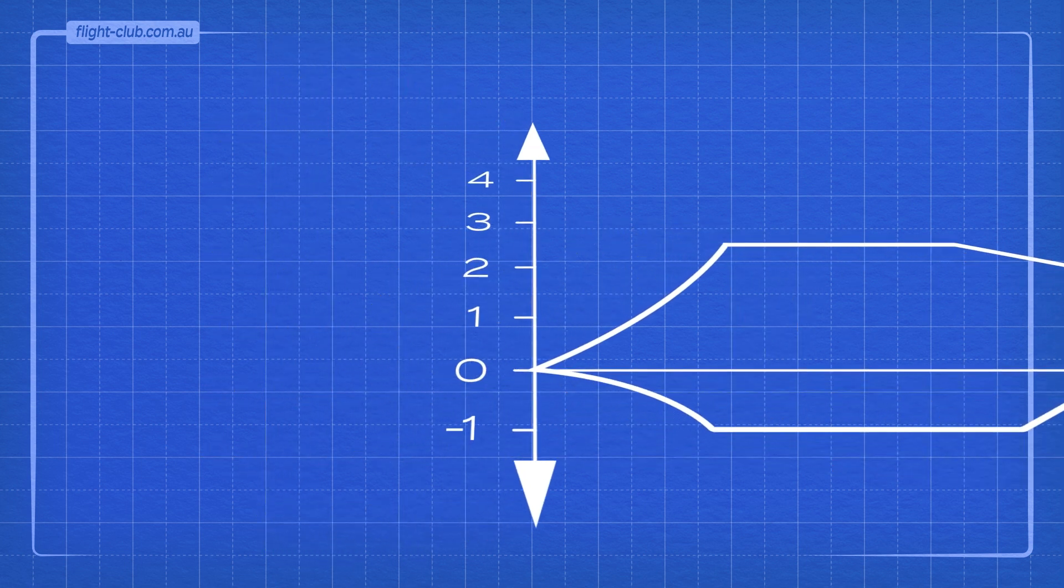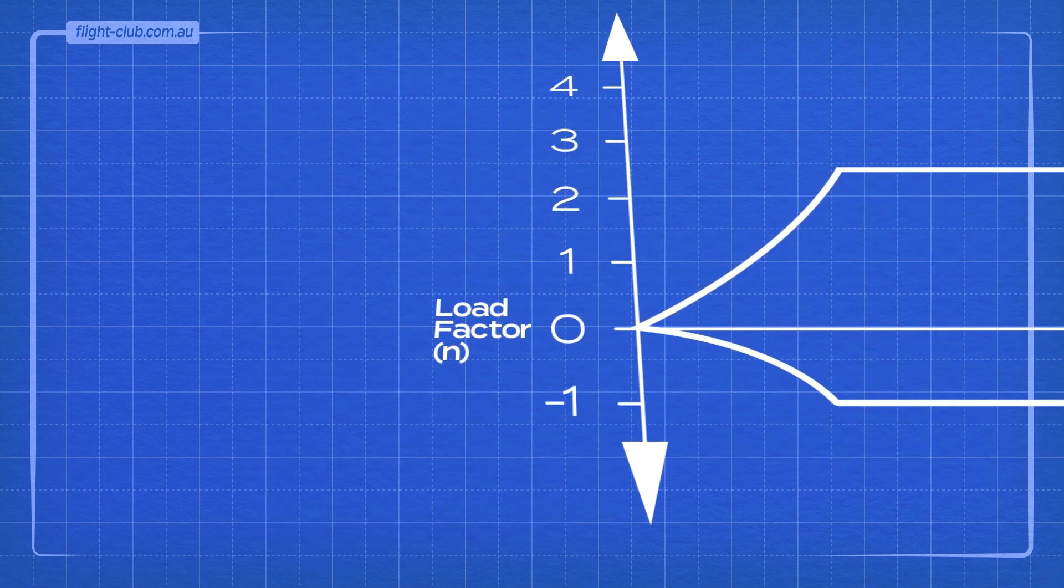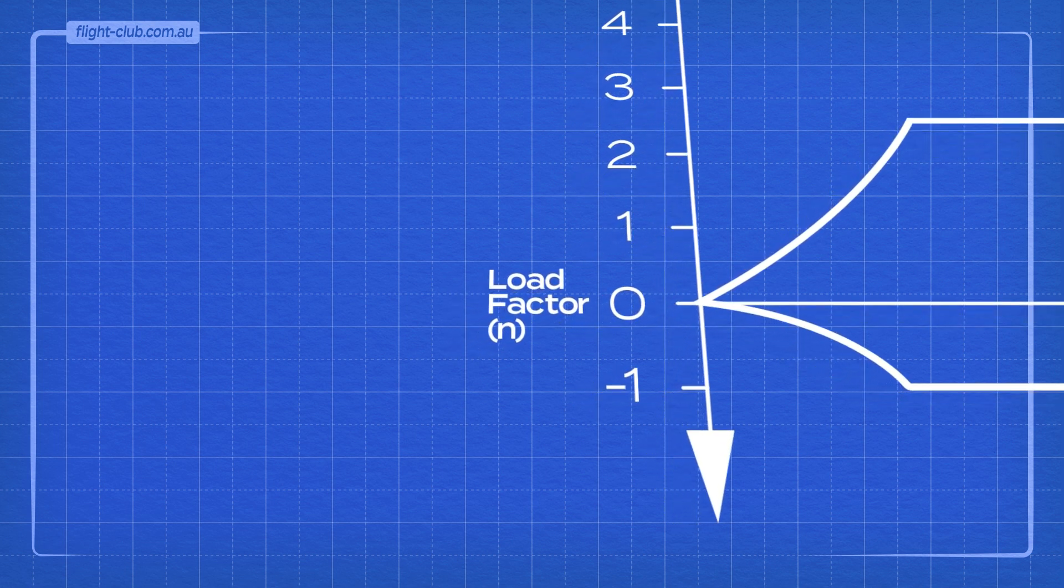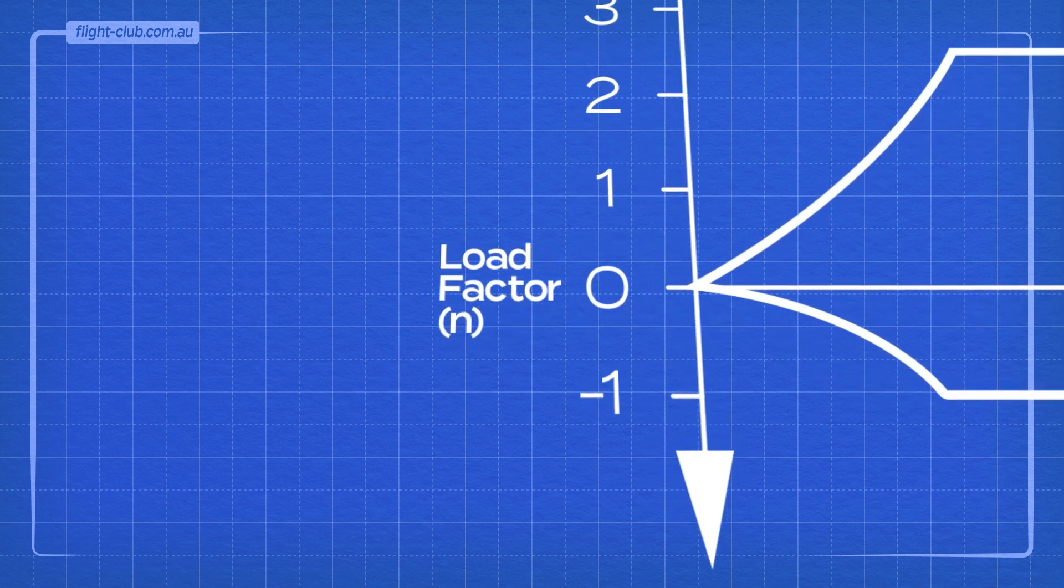The vertical axis represents the load factor, which is defined as the ratio of lift generated by the airplane to its weight.